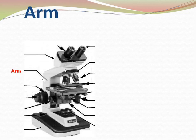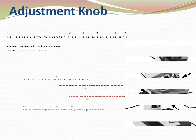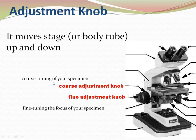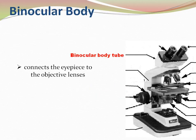Then comes the arm. The function of the arm is to support the tube and connect it to the base. There are two adjustment knobs: the fine adjustment knob and the coarse adjustment knob. The coarse adjustment knob is used to focus the specimen grossly, and the fine adjustment knob is used for fine tuning to focus the specimen. The binocular body carries the eyepiece and connects the eyepiece to the objective lens.